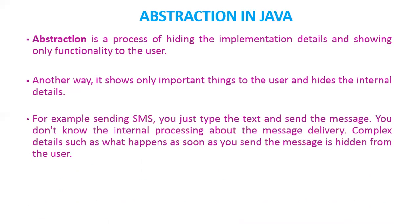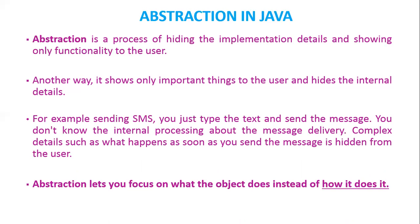Consider another real-life example: when we send an SMS, we just type the text and send the message. We don't know the internal processing about the message delivery. Complex details such as what happens as soon as we send the message are hidden from the user. Abstraction lets you focus on what the object does instead of how it does it.